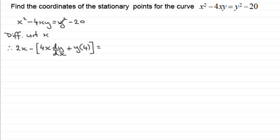Then it's plus for the product rule. And then I take the y and I multiply the y by the differential of 4x with respect to x, which is just going to be simply 4. And we'll close those brackets off. And then we've got the equals. And now we differentiate y squared with respect to x.